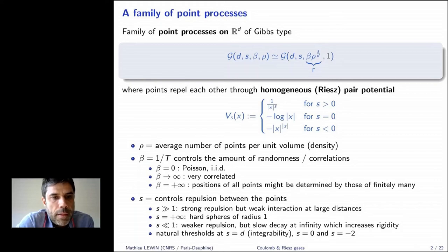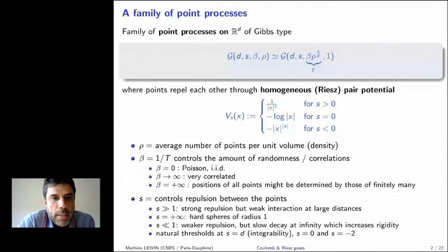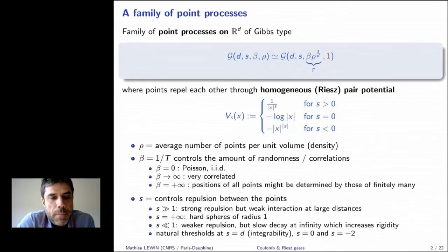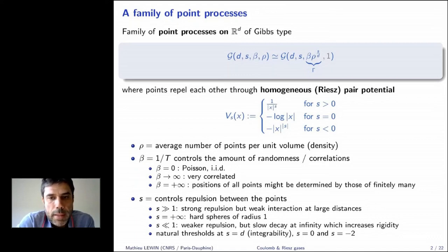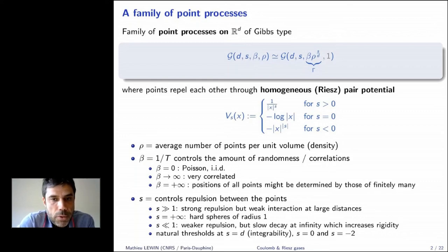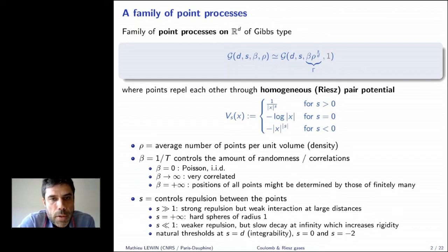The parameter β is one over the temperature. β controls the amount of randomness or correlations in the point process. When β = 0 it's just Poisson — everyone is i.i.d. When β → ∞ (temperature → 0), the points become more and more correlated. At zero temperature, knowing finitely many point positions could in principle determine all others — extremely correlated. So β controls randomness; s controls the homogeneity of the potential.